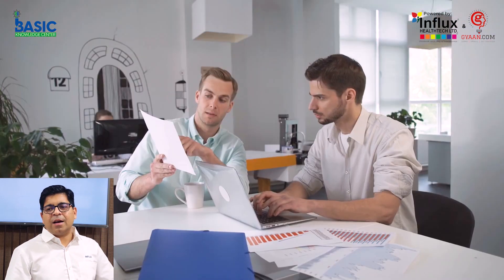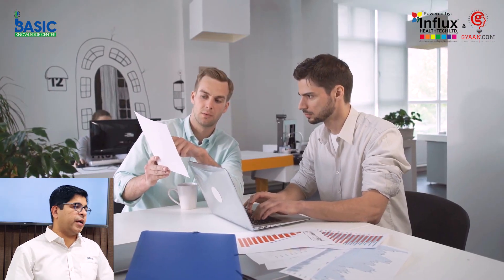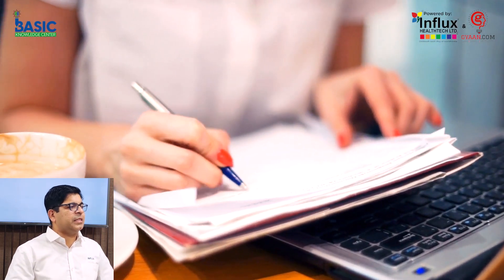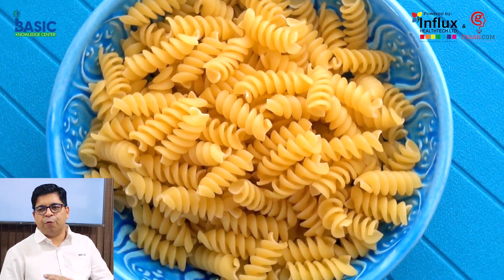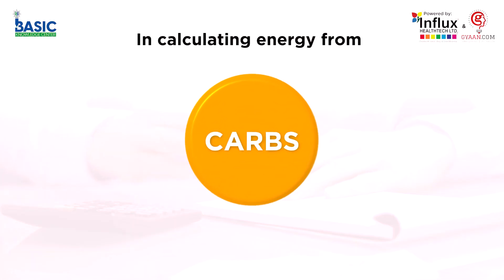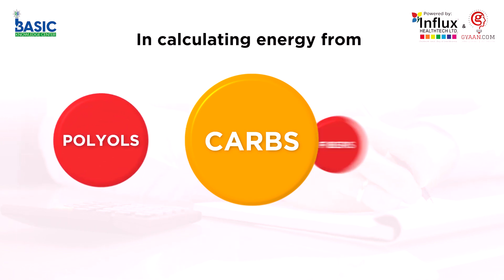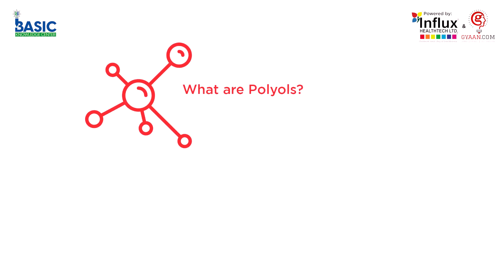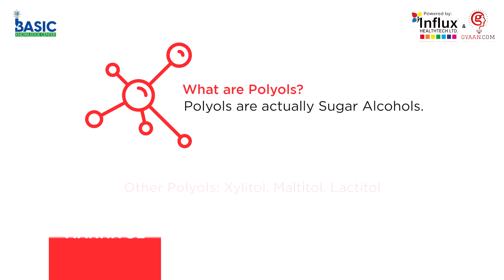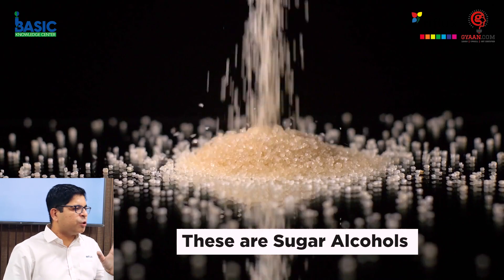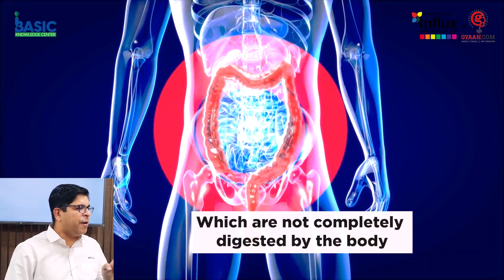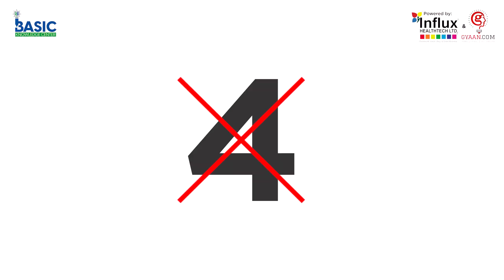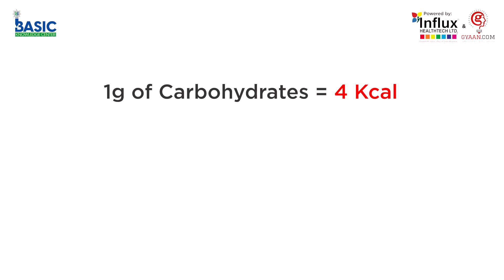But sometimes there are other factors which have to be taken into account — this is not as simple as it seems. Especially when calculating carbohydrates, we have to be very careful. We need to check the quantity of polyols and fibers. Polyols are sugar alcohols, like mannitol, sorbitol, and erythritol. These sugar alcohols are not completely digested by the body, so there will not be a factor of 4. Generally carbohydrate gives 4 kilocalories, but polyols give only 2 kilocalories per gram.